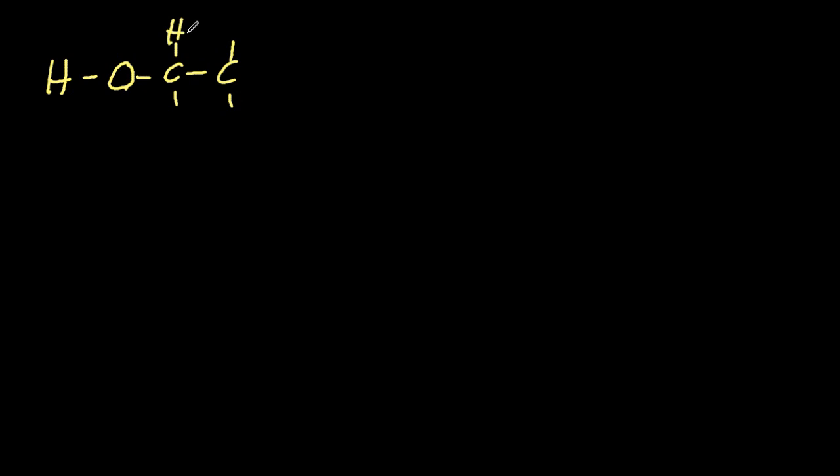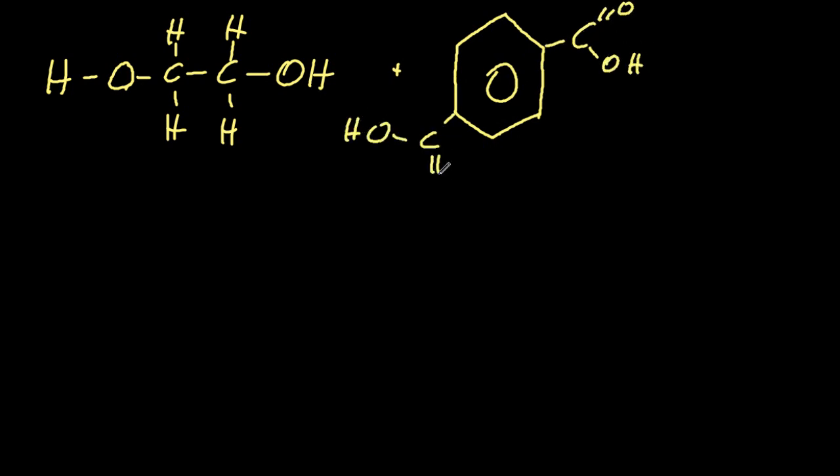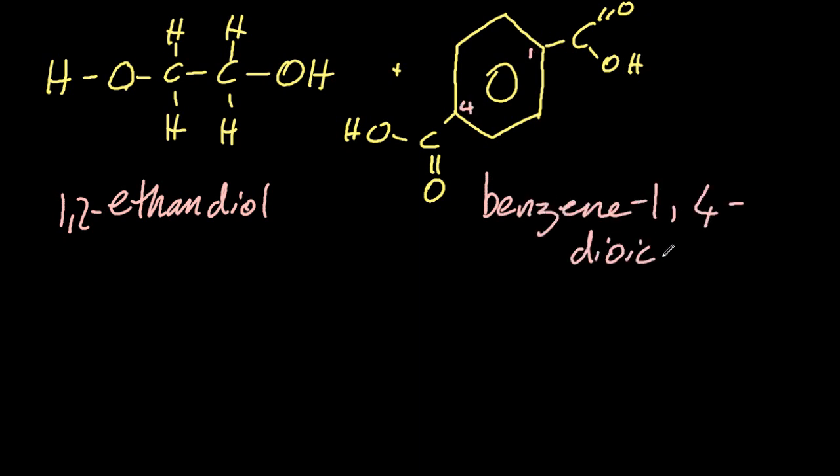This is the specific example from the syllabus. This makes polyester the clothing. So take ethan-1,2-diol and this chemical here. Oh that looks tricky. Benzene 1,4-dioic acid.